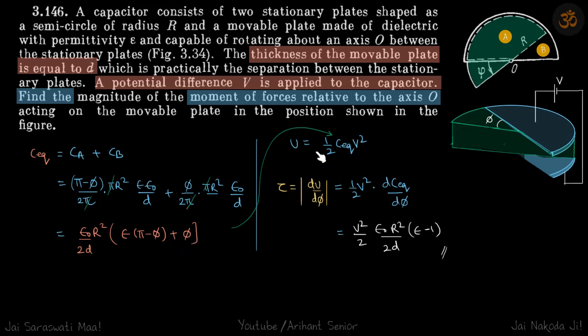We'll put that in. Half and V² are constant, inside will be left with dC equivalent by dφ, and we'll get our answer. Surprisingly, it's independent of φ.